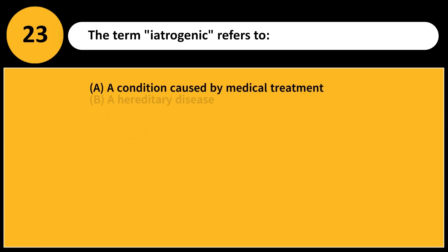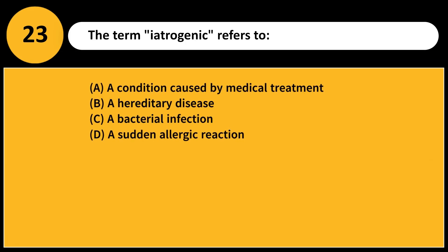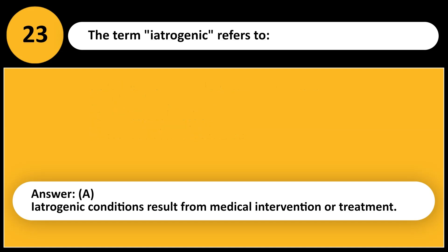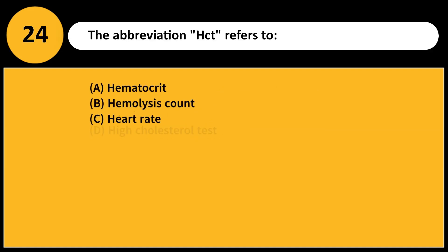The term iatrogenic refers to: A. A condition caused by medical treatment B. A hereditary disease C. A bacterial infection D. A sudden allergic reaction. Answer: A. Iatrogenic conditions result from medical intervention or treatment.